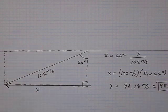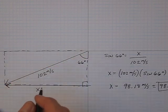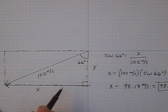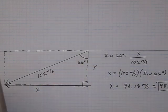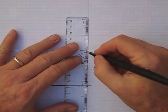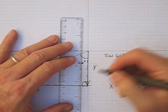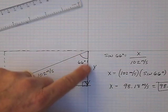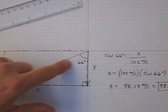Now we want to find the y component of this 102 meters per second vector. So I'll look at this side over here. I'm looking for this side of the triangle now. I'll draw that vector in and I can see that this is the adjacent side of the triangle and we know the hypotenuse.